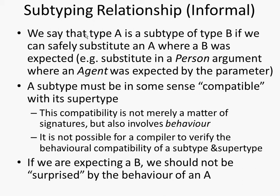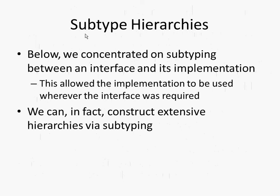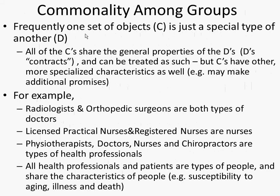A person satisfies all the properties of an agent, but it has some very specific properties additionally. So within Java and AnyLogic by extension, we have subtype hierarchies which capture commonality. For example, radiologists and orthopedic surgeons are both types of doctors. Licensed practical nurses and registered nurses are nurses. Physiotherapists, doctors, nurses, chiropractors — types of health professionals. And all health professionals and patients are types of people. All subtypes share the general properties of their parent but can have more specialized characteristics.